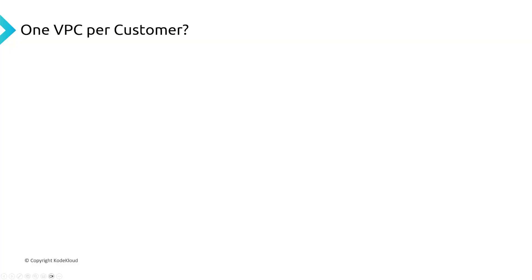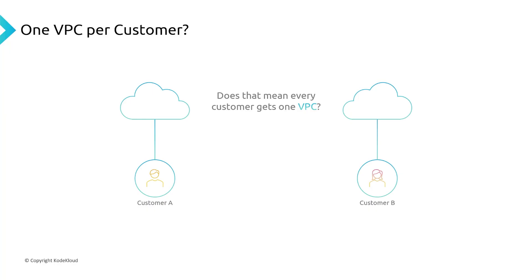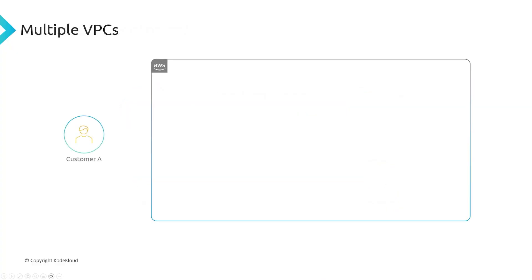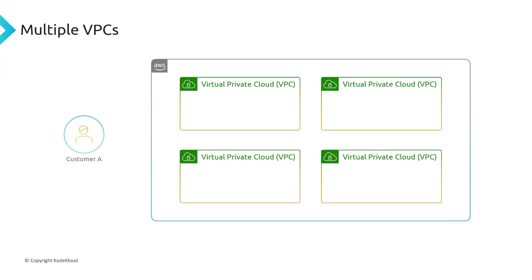You might be wondering: does every customer get exactly one VPC, performing the one main operation of isolating your infrastructure from other people's? Not exactly. You can have more than one VPC. Within your AWS account, you can actually create multiple VPCs. How you structure them is ultimately up to you as the customer. Potentially, you could have one VPC for each of your environments — one for development, one for staging, one for production. Or you could segment it so that each application has its very own VPC: application one has its own VPC, application two has its own VPC.